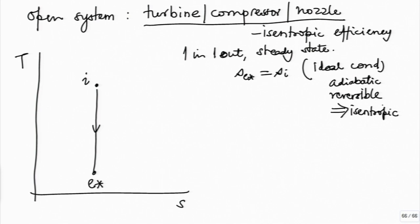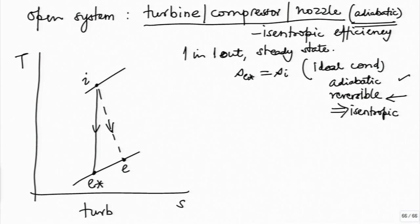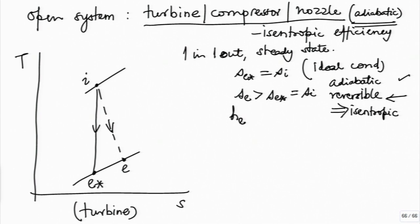However, even if they remain adiabatic — which is a requirement — they cannot be reversible, and hence the entropy at the exit will have to be higher than that at the inlet. The actual process will be something like this. For a turbine, we will have S_e greater than S_e*, which should equal S_i, and because of this, your h_e will be greater than h_e* — the enthalpy.